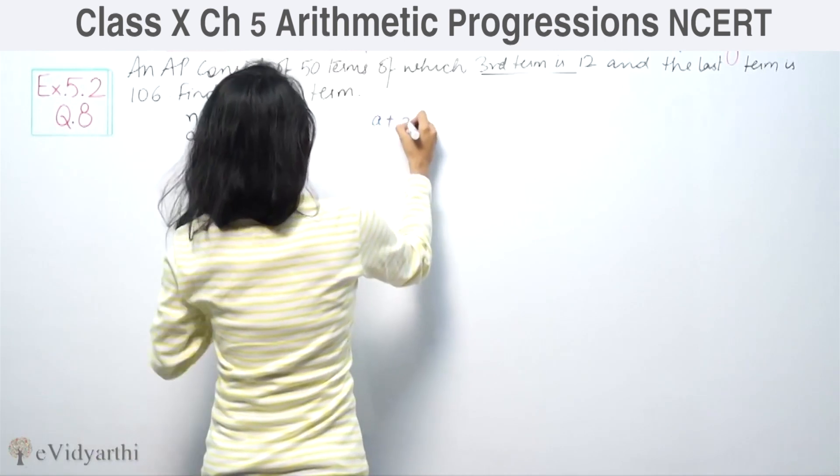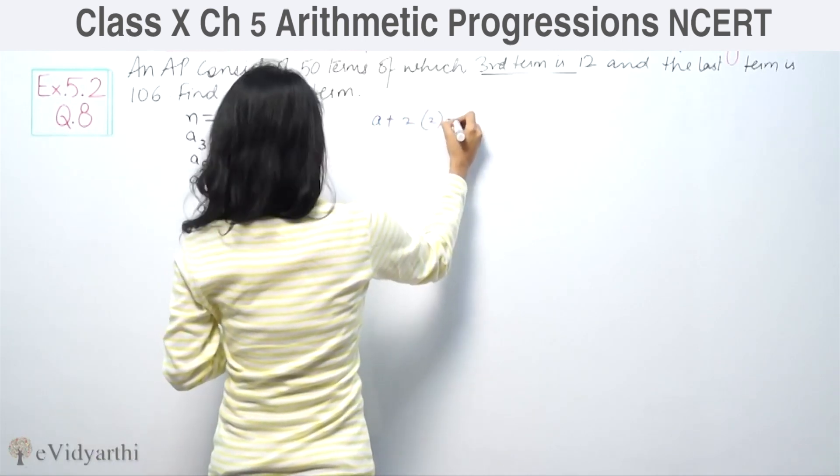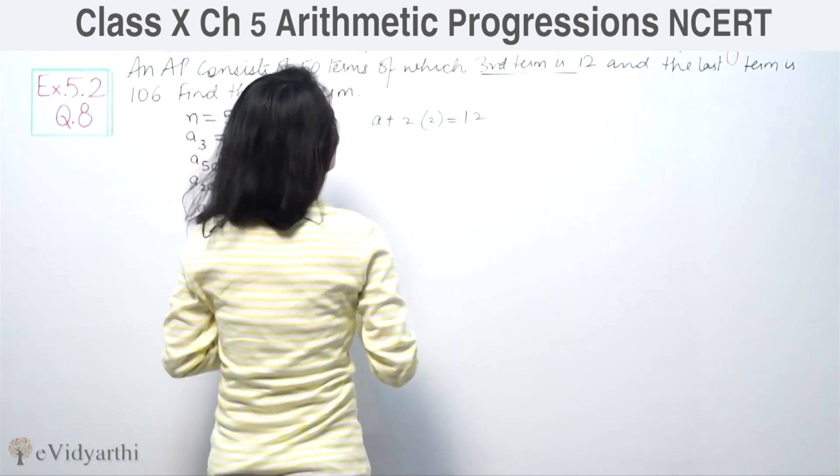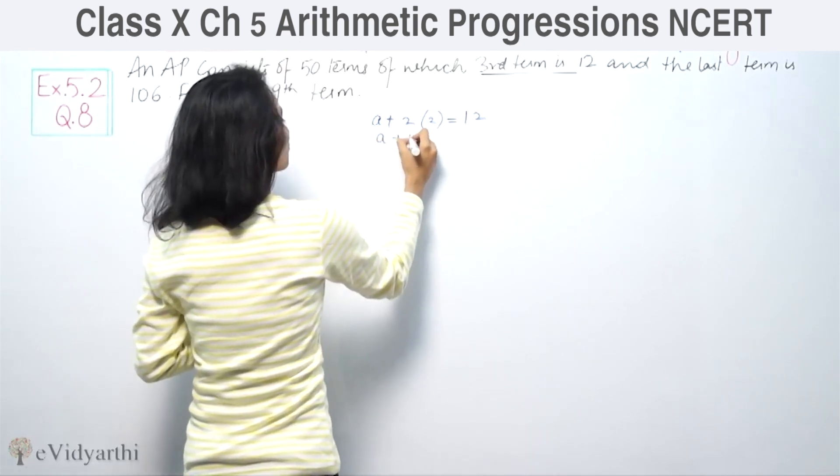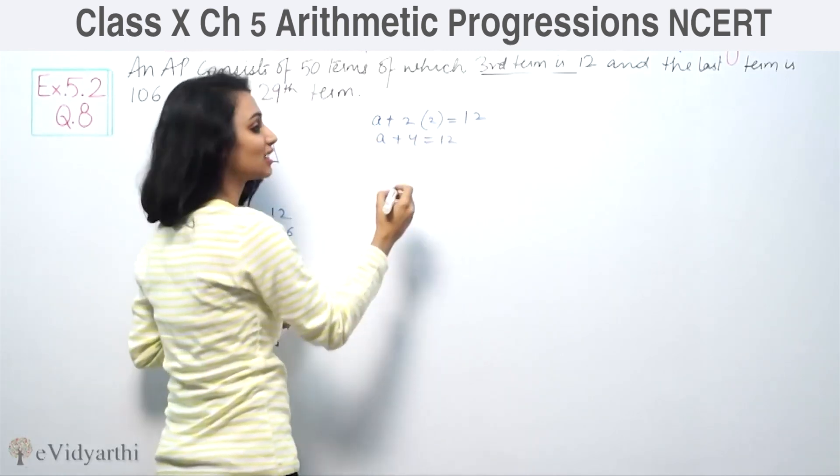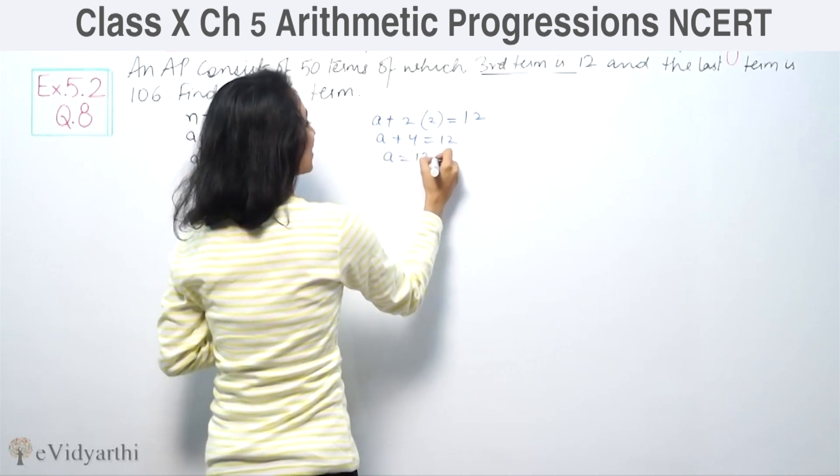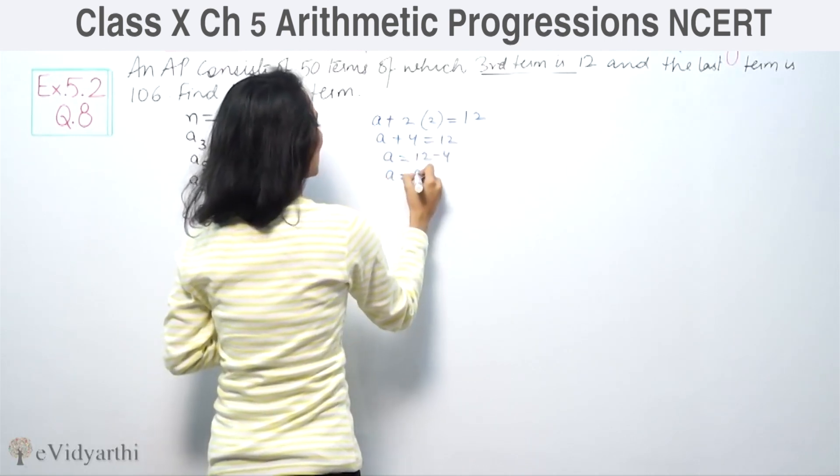So A plus 2, common difference 2, is equal to 12. So A plus 4 is equal to 12. A is equal to 12 minus 4, so A is 8.